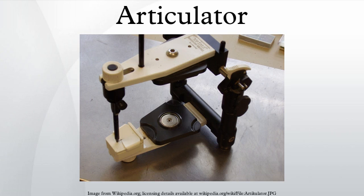In the stone base disposable articulator system, a model of the patient's teeth for the maxilla and mandible are each mounted on a stone base with the use of dowel pins. The two are then brought together and articulated using a disposable articulator to act as the condyle. This requires two pours: the first to get the model from the impression taken by the dentist, and the other for the stone base made from a rubber mold.